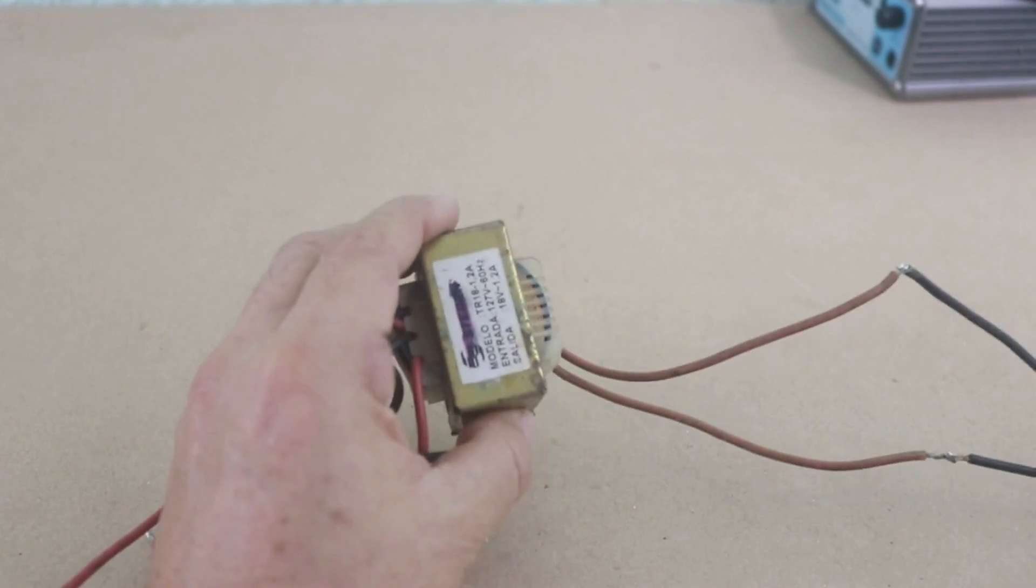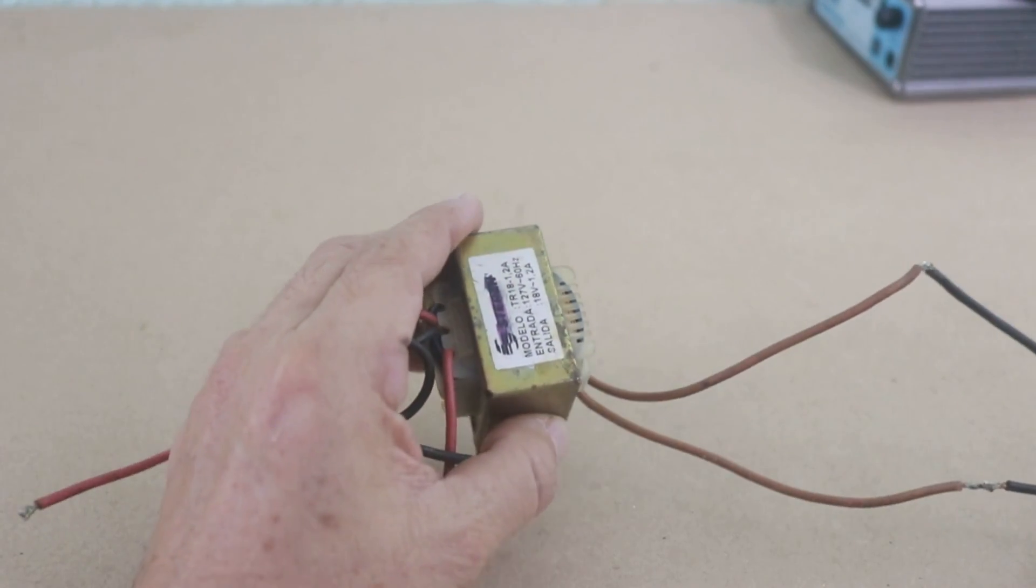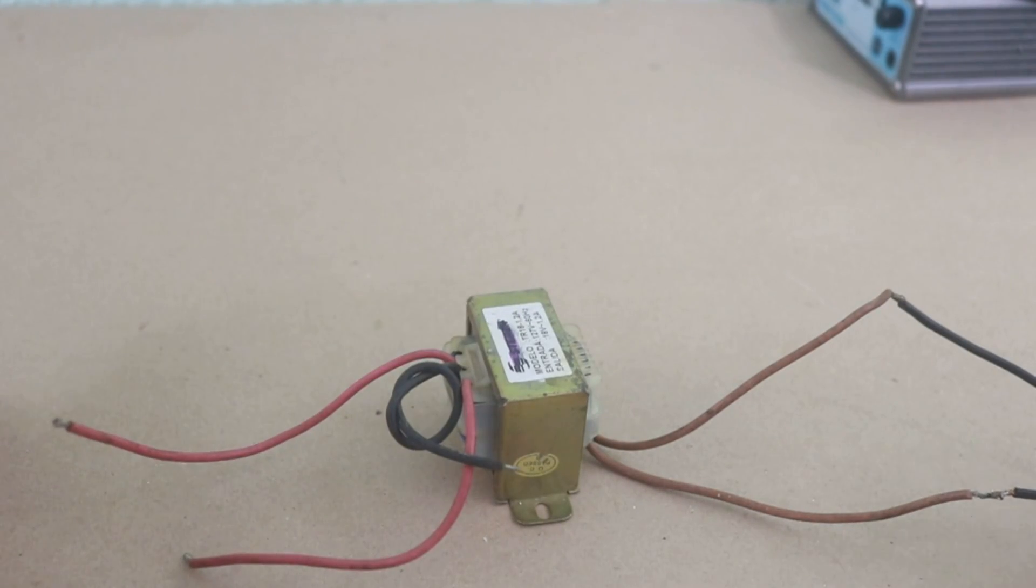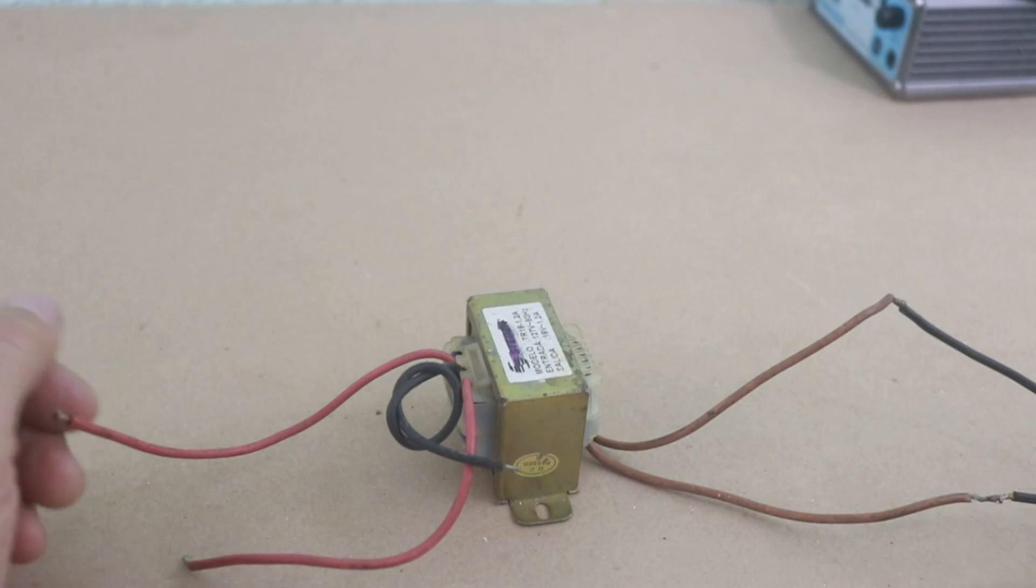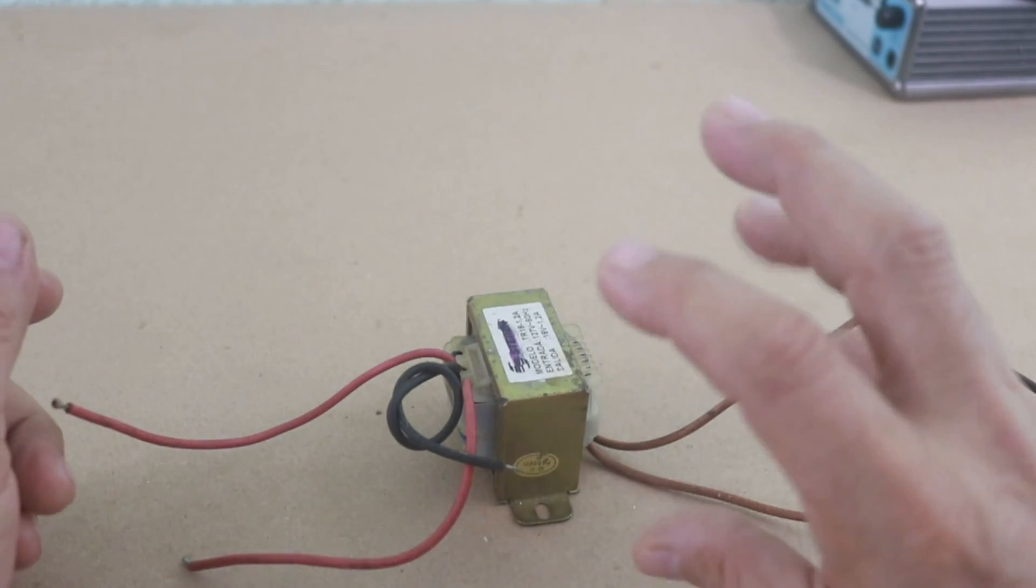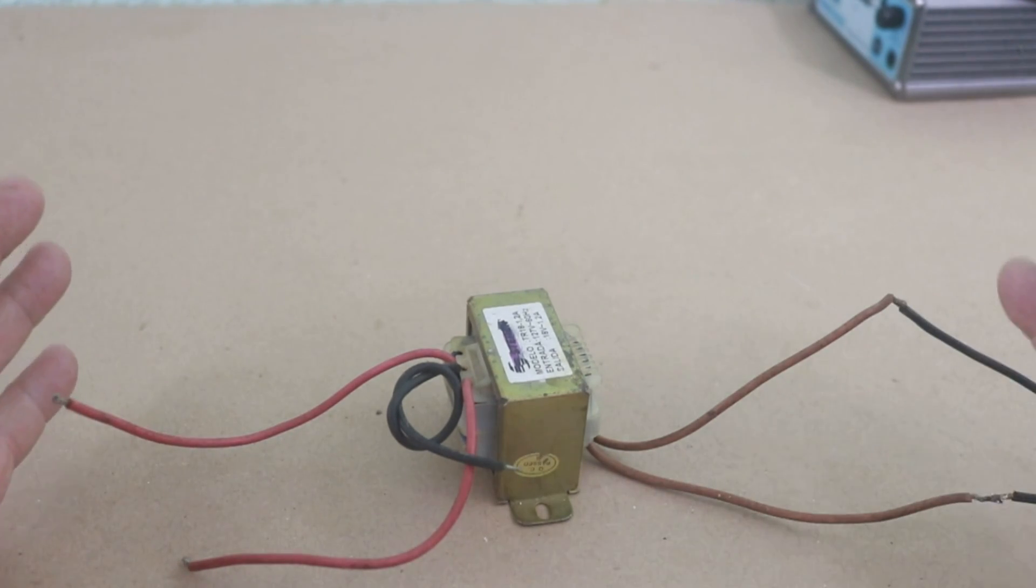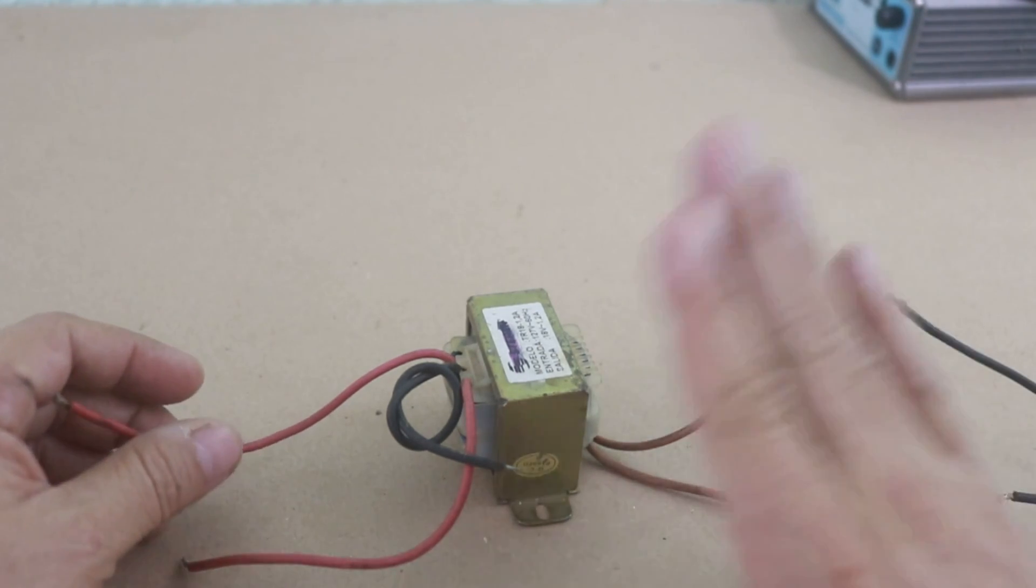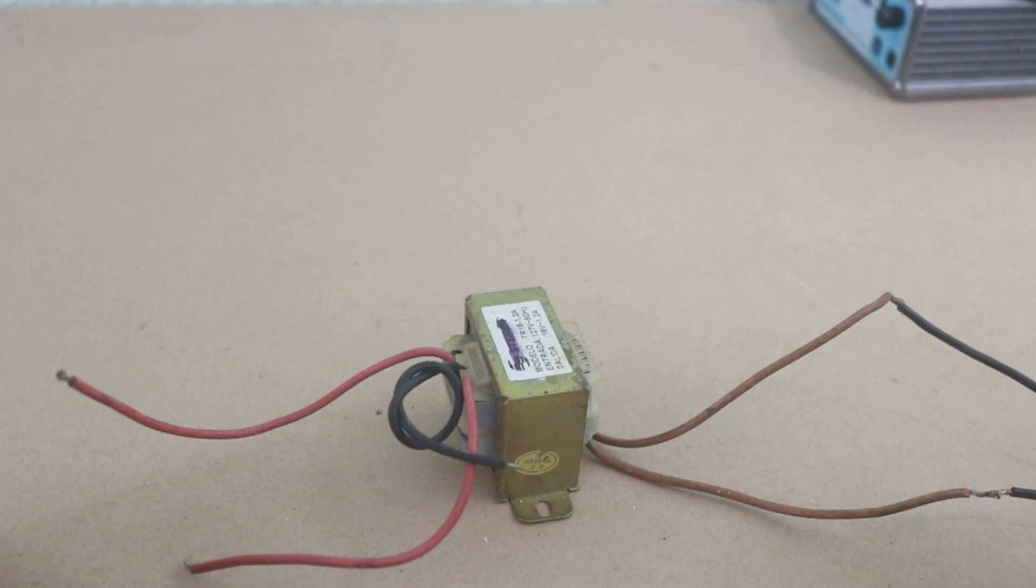And of course in this type of wiring we do not have the functionality of a real autotransformer that has a dial that we can turn and obtain a continuously variable voltage. But we can use this setup if we need a voltage different from the wall voltage.